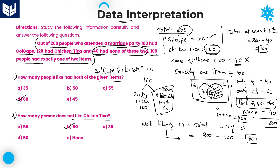In this way you need to solve problems based on this model. Even though the information is very less, you need to do calculations — it is not an easy task. You need to be cautious about each individual statement and word, because only Golgap, only Chicken Tikka, and Golgap and Chicken Tikka together are all different values. I hope you understand each and every problem in this session. Thank you for watching.